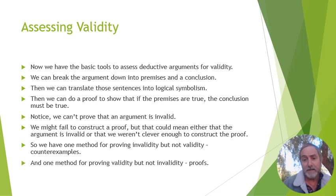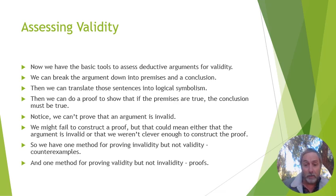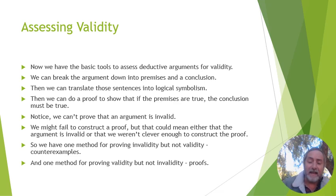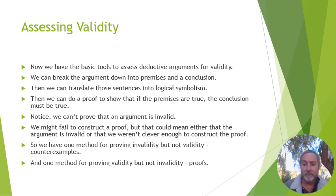If we can't do the proof, we're never quite sure whether we just weren't clever enough or whether such a proof doesn't exist. Remember, we had the inverse situation with our counterexample method: if we can come up with a counterexample, we've definitely shown the argument to be invalid, but we could never know if it was valid. Here, if we can do the proof, we know it's valid; if we can't, maybe we just weren't clever enough. Between the two, you have good methods for checking arguments for both invalidity and validity.